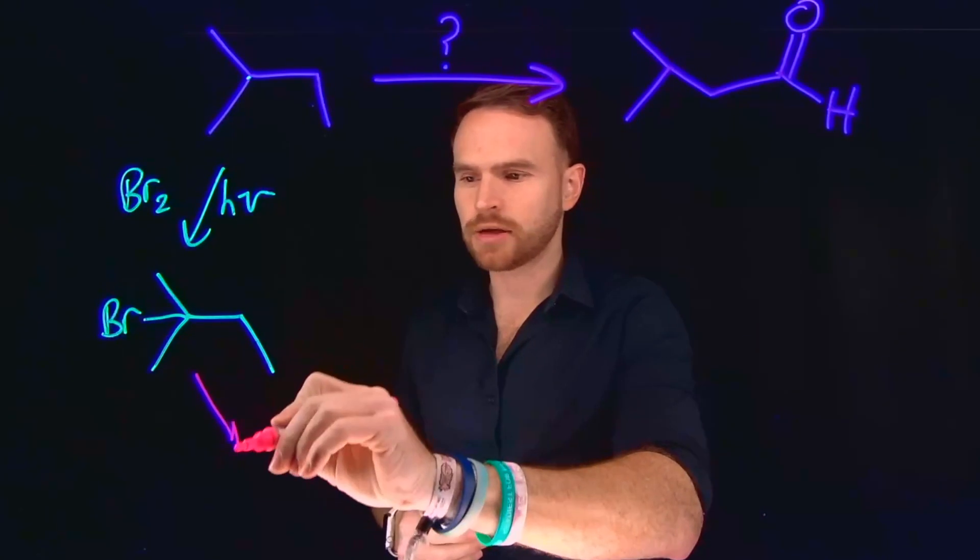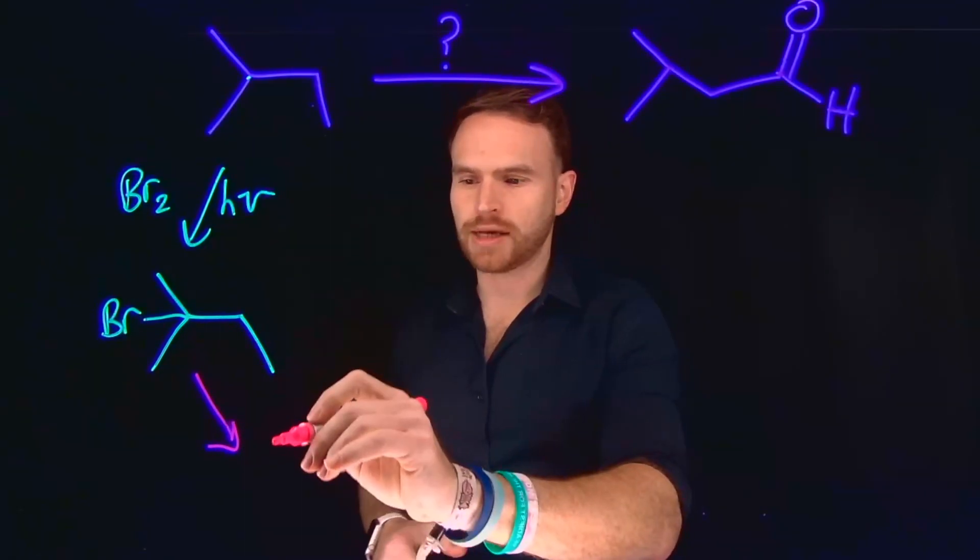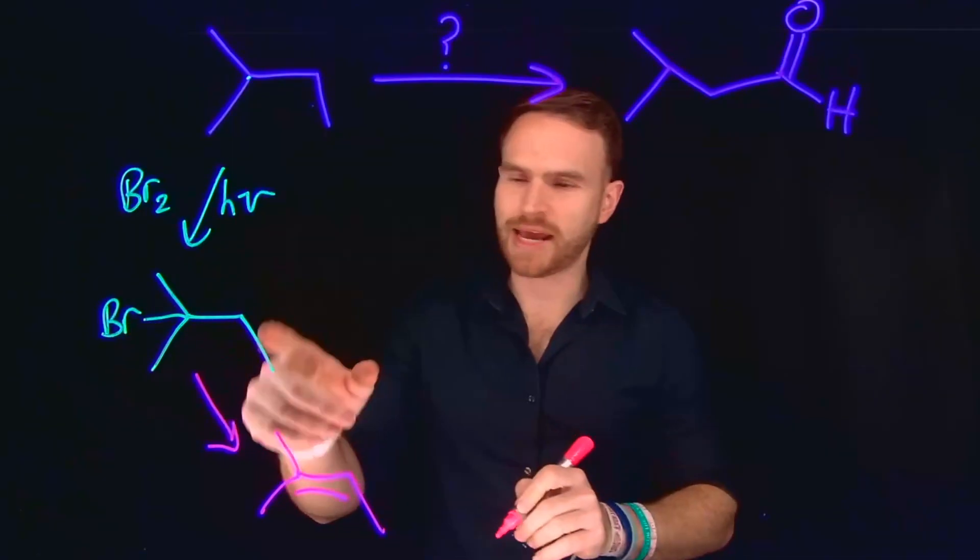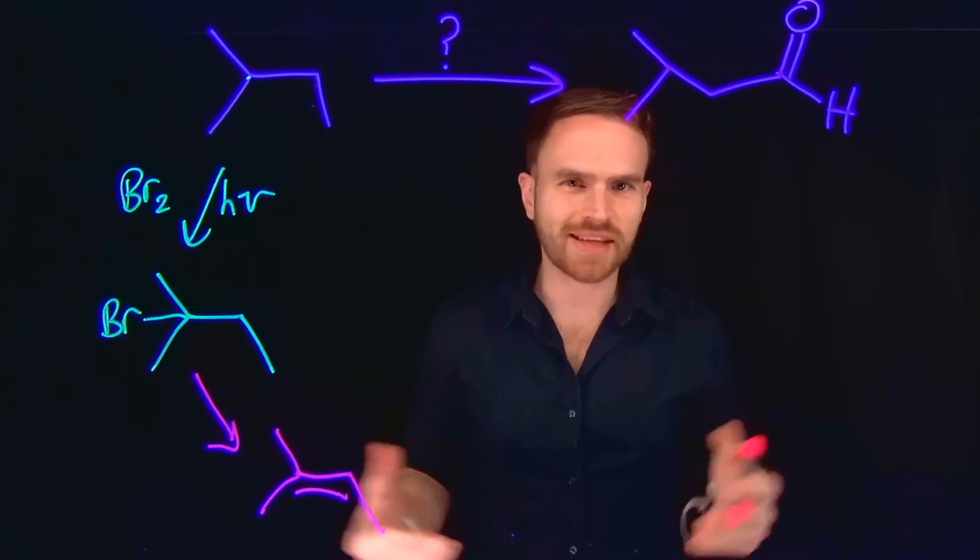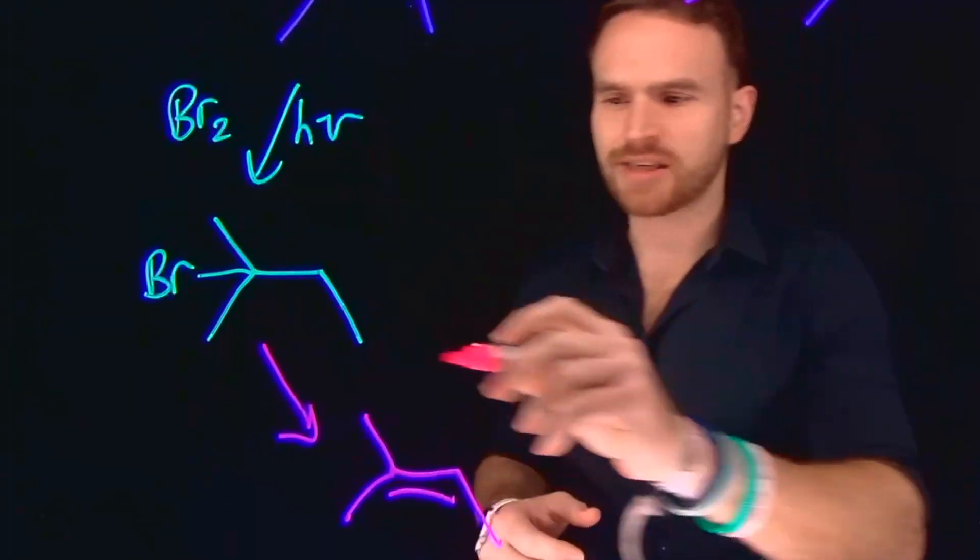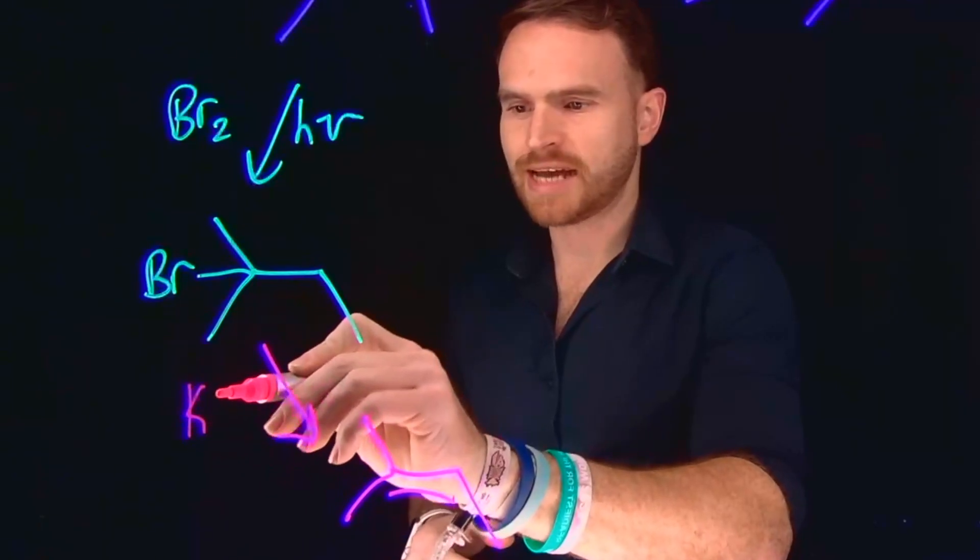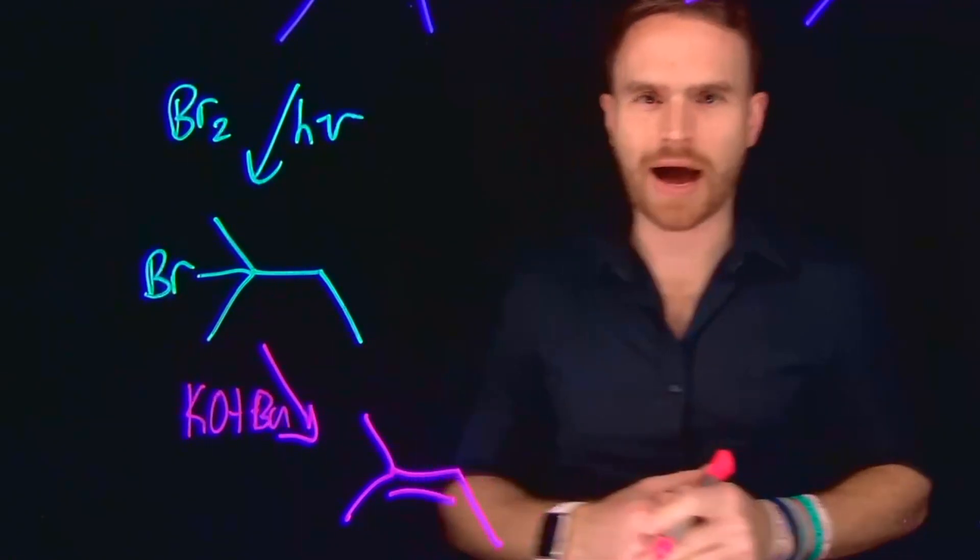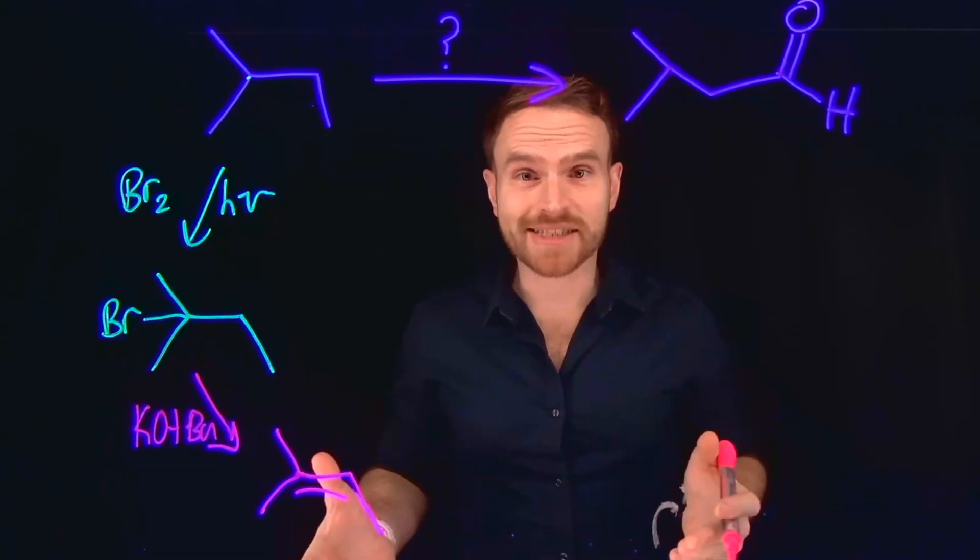And then from here, I can do an elimination reaction in order to generate an internal alkene. So I can generate an internal alkene by simply eliminating this reaction by using a strong base like sodium terbutoxide or potassium terbutoxide, if you prefer. So potassium terbutoxide would be sufficient in order to give us this internal alkene, or what's also known as a Zaitsev alkene.